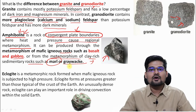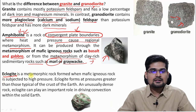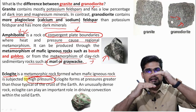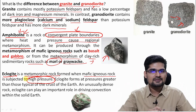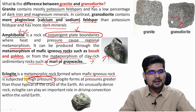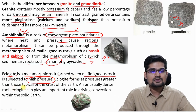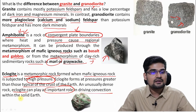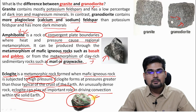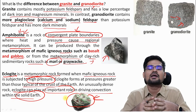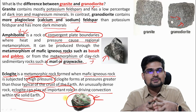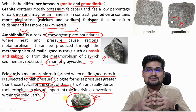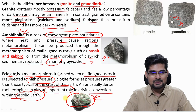The lower layer of eclogite is a metamorphic rock formed when mafic igneous rocks are subjected to very high pressure — under the influence of so much pressure from the layers above. Eclogite forms at pressure greater than those typical of the crust and these are unusually dense rocks. Eclogite can play an important role in driving convection within the solid earth. This is the three-layer stratification talked about by Arthur Holmes — these layers and these particular kinds of rocks are formed because of particular kinds of thermal convection.